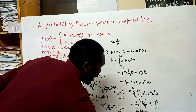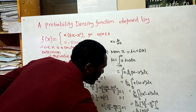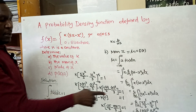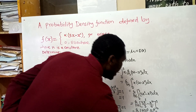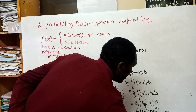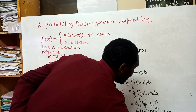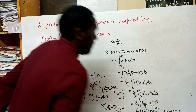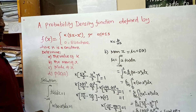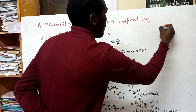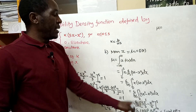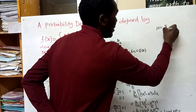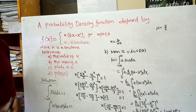Substituting the upper limit x = 5: (6/125) times [5(5³)/3 - 5⁴/4], then subtracting the lower limit substitution with x = 0: (6/125) times [5(0³)/3 - 0⁴/4]. When you work that out, you will end up with 5/2 as the expectation of x, or the mean of x.